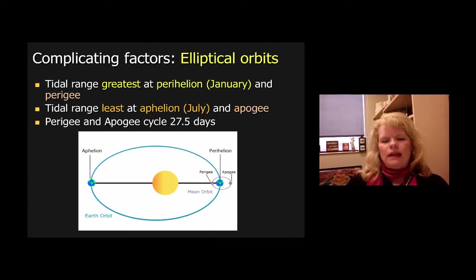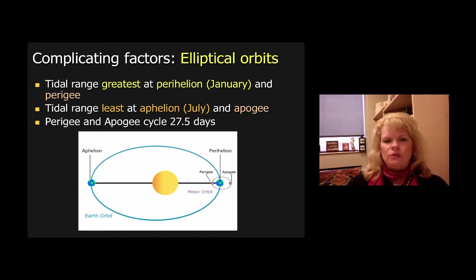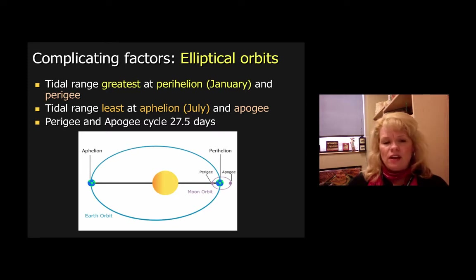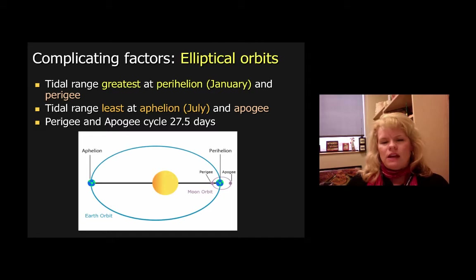Elliptical orbits of our planet also impact tidal situations. Tidal range is greatest at perihelion, which happens in January, and the Moon's equivalent is perigee — when the Moon is closest to the Earth. Tidal range is least at aphelion in July, and the Moon's equivalent is apogee — when the Moon is farthest from the Earth. Perigee and apogee have to do with the Moon-Earth relationship, while perihelion and aphelion relate to Earth and the Sun. The perigee-apogee cycle is 27.5 days, known as the anomalistic month.